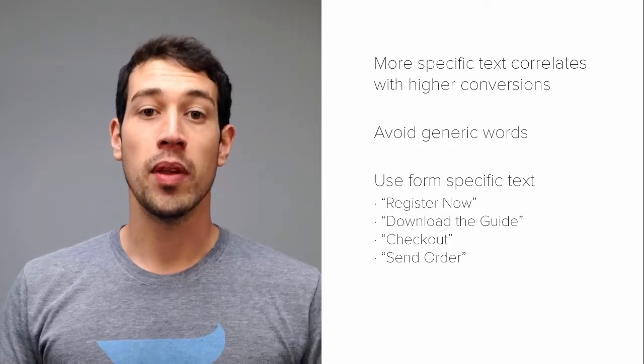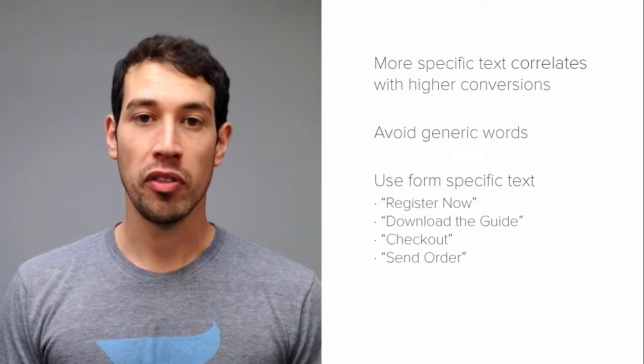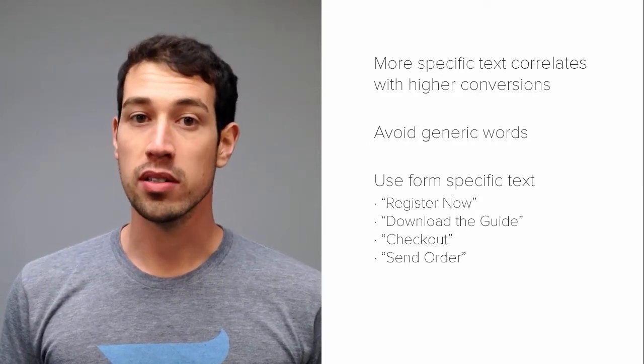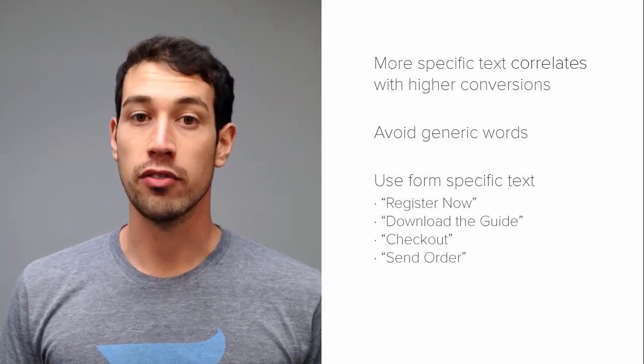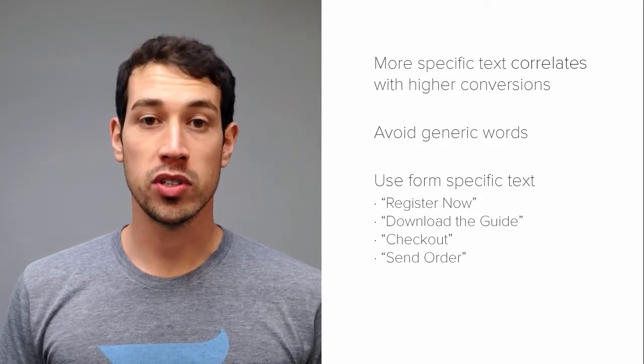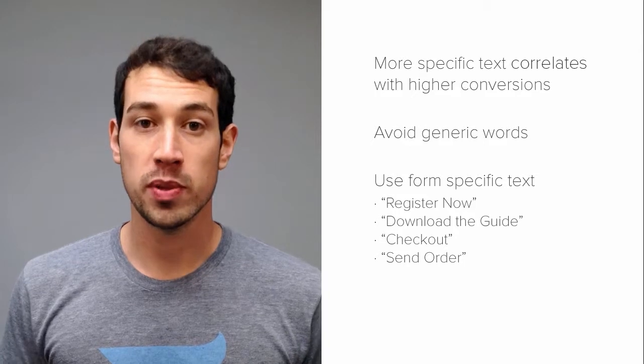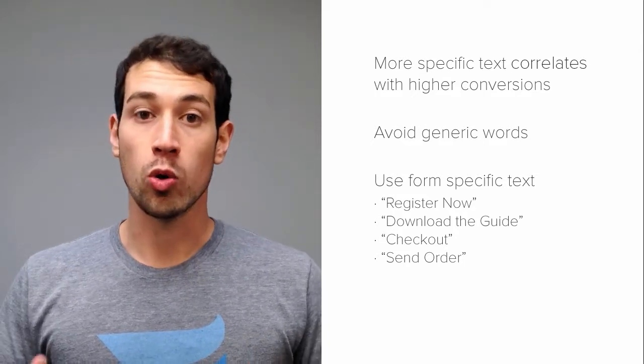Optimizing your form buttons might seem pointless, but it's the final step between the user and your form submission. So here are seven steps to help your buttons perform as best they can. Number one: make the text specific. One thing we learned from our 2014 conversion report was that more specific button text showed a correlation with higher conversion rates. So get away from using text such as 'send' or 'submit', and instead try using something more specific like 'send registration' or 'register now'.